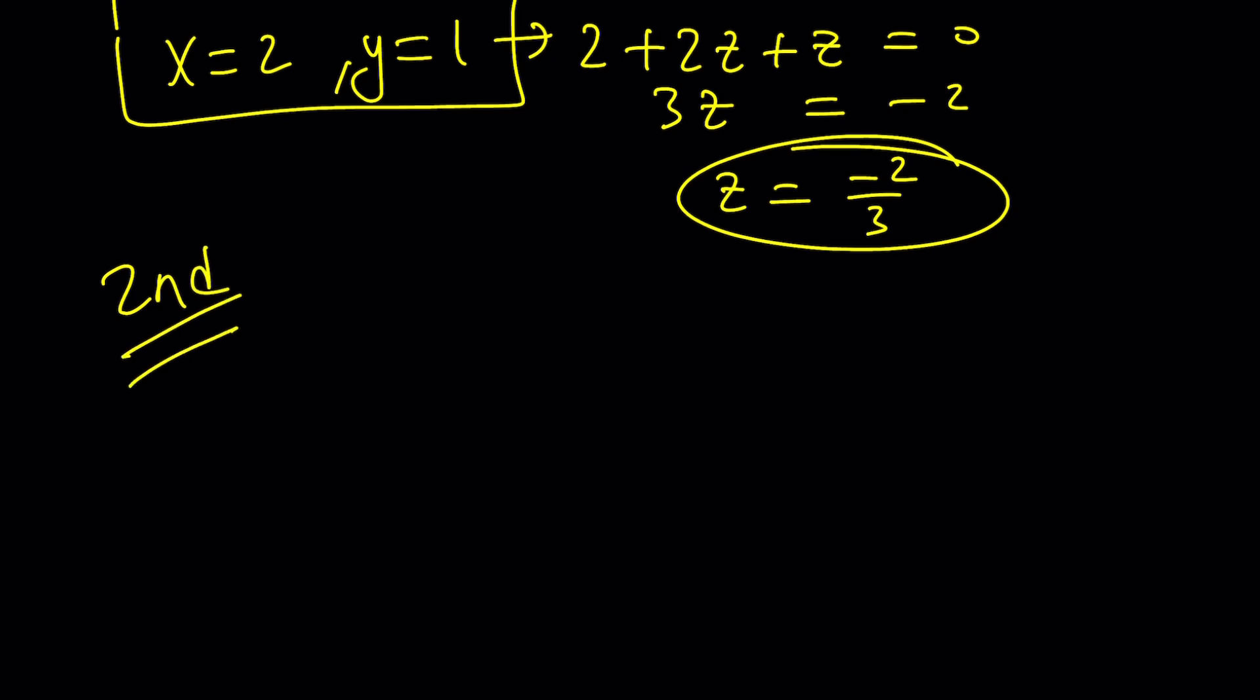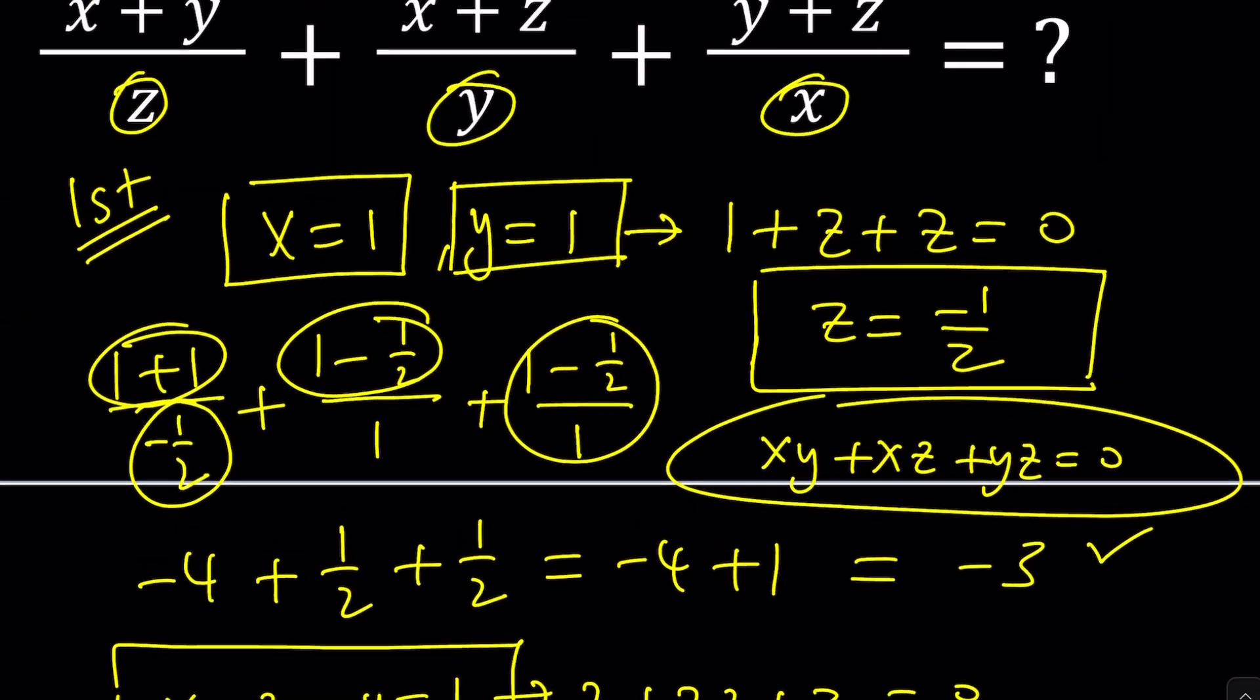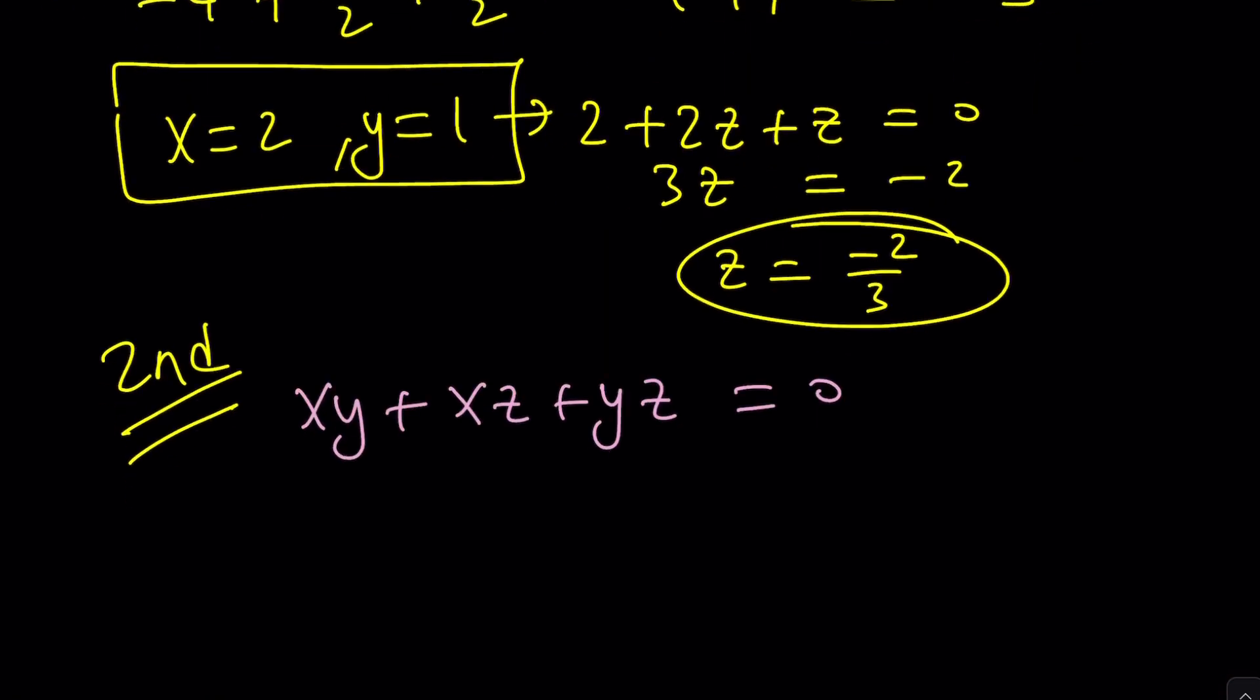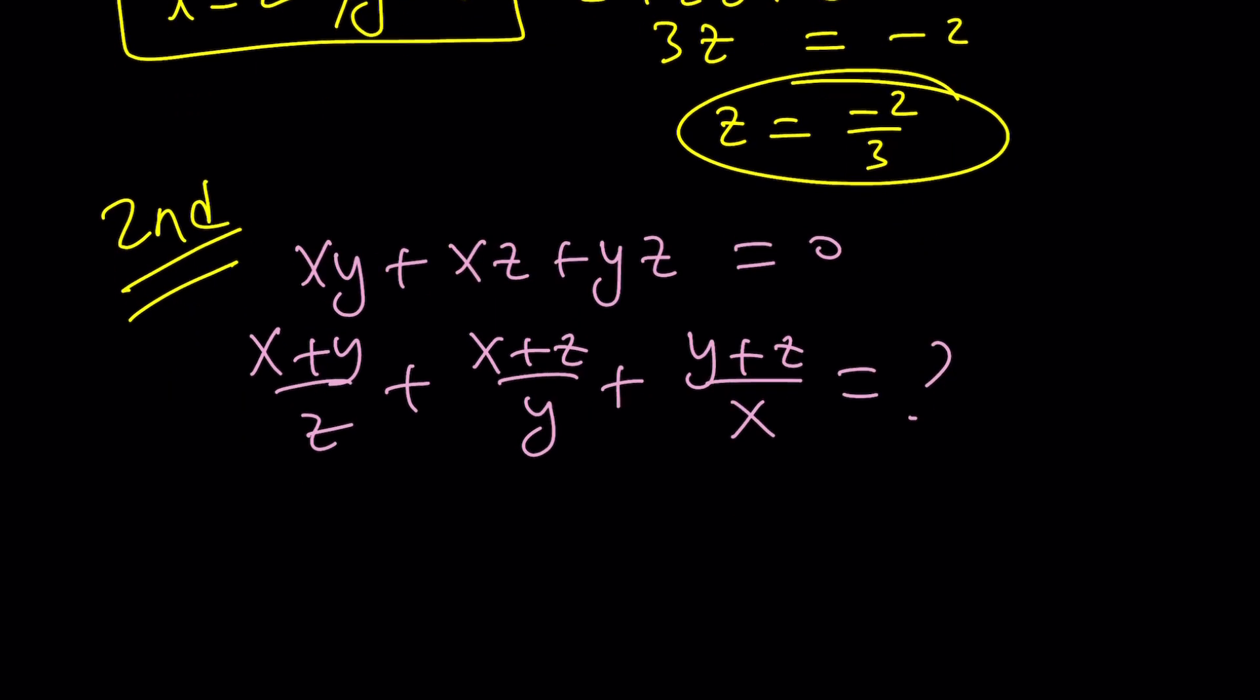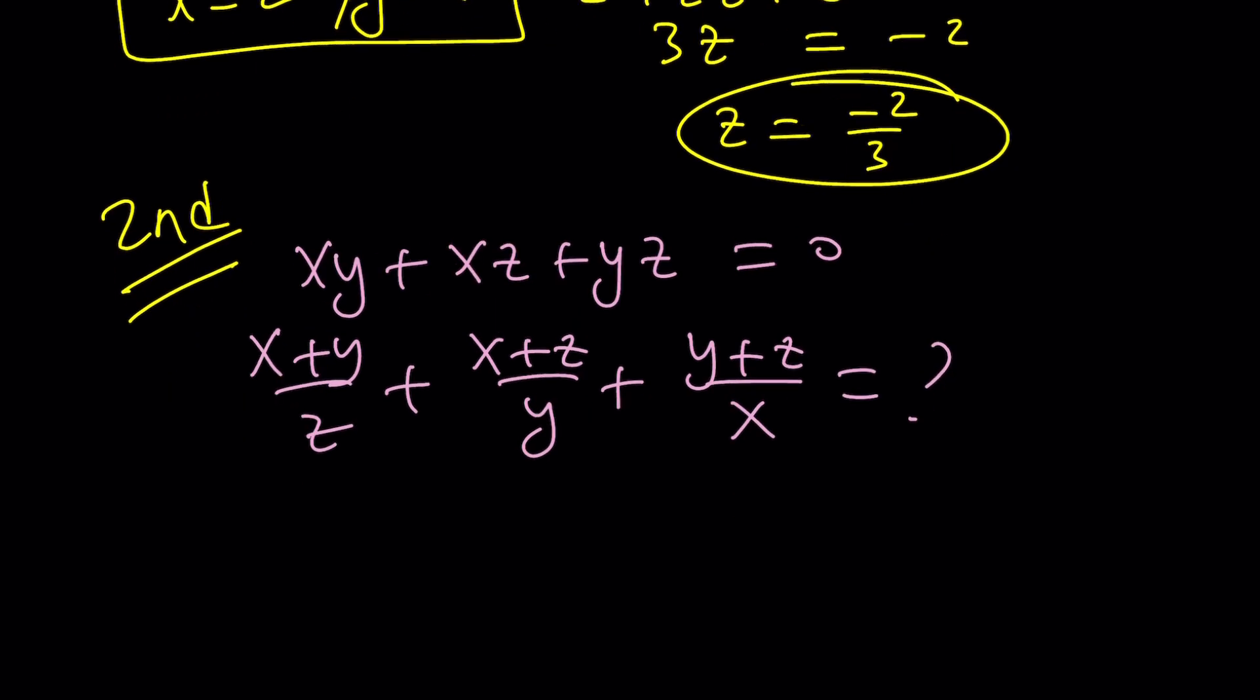Let's go ahead and take a look at the second method and the second method is basically going to focus on trying to solve this algebraically. We know that xy plus xz plus yz is equal to zero and we're trying to apply it to this sum here (x+y)/z plus (x+z)/y plus (y+z)/x. Can we do something by making a common denominator?